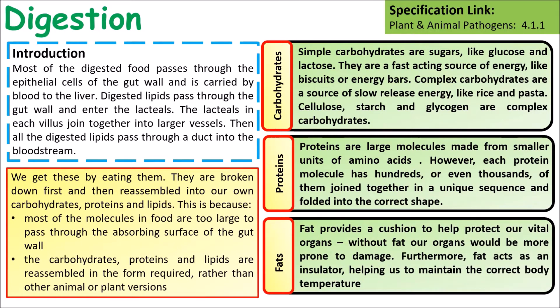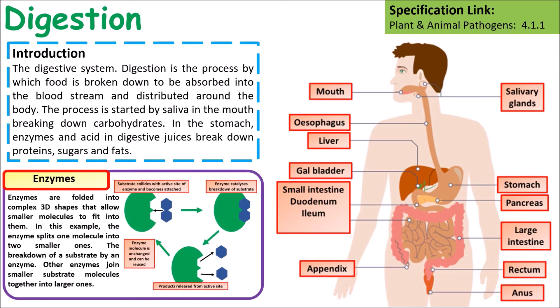Fats have a range of different uses in the body. Fats are used to cushion vital organs, they can be used to insulate the body and help maintain body temperature, and finally they can act as a long-term store of energy.